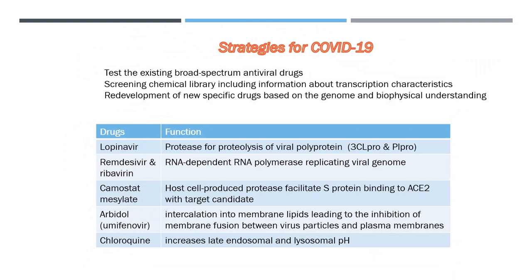At present, drugs for COVID-19 have been intensively developed, but we have not found a specific vaccine or antiviral treatment for human and animal coronaviruses. Strategies for COVID-19 therapies include: testing existing broad-spectrum antiviral drugs using standard assays previously used to treat other viral infections; screening chemical libraries containing many existing compounds or databases including transcription characteristics in different cell lines; and redevelopment of new specific drugs based on the genome and biophysical understanding of individual coronaviruses.